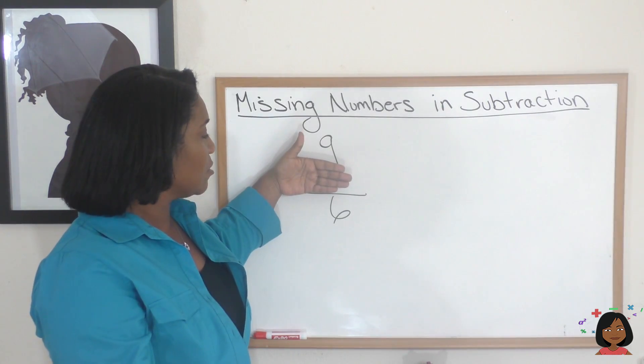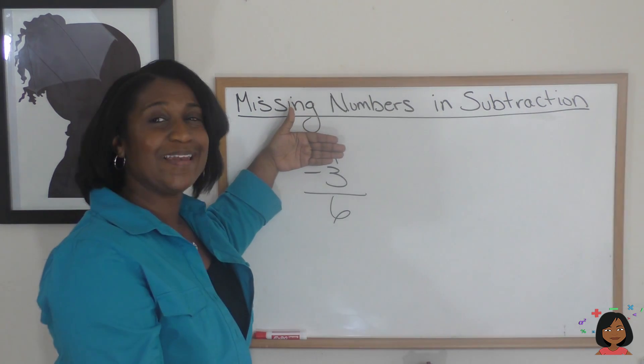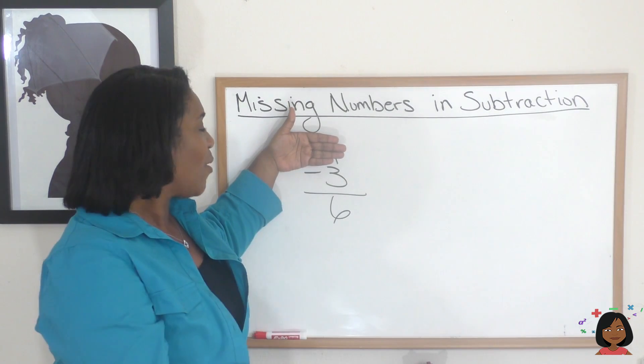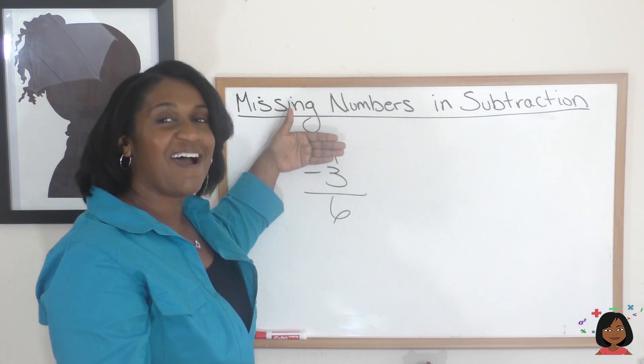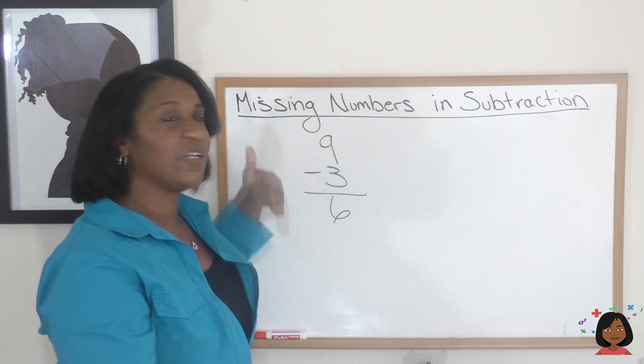But what about if I wanted to cover up the 9 instead, which is, by the way, the minuend. How could I get to 9 with my 3 and my 6? Ah, you see that I could add them. I could add the 6 and the 3, and that would give me 9.